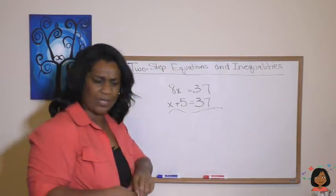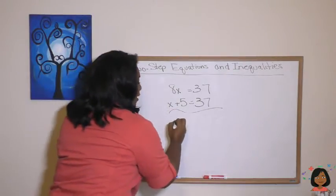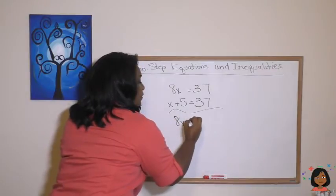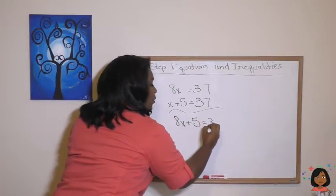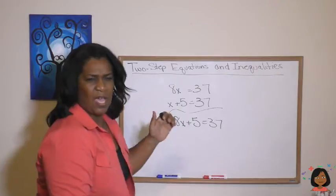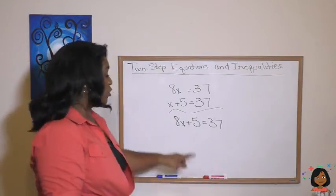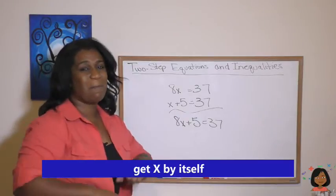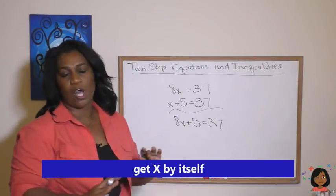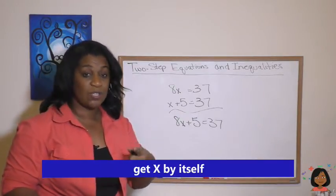But we're talking about two-step equations today. So what if we had something that looked like this? 8x plus 5 equals 37. How do we do that? The way I like to think about it is your goal is to get x by itself. x wants to be all by itself.